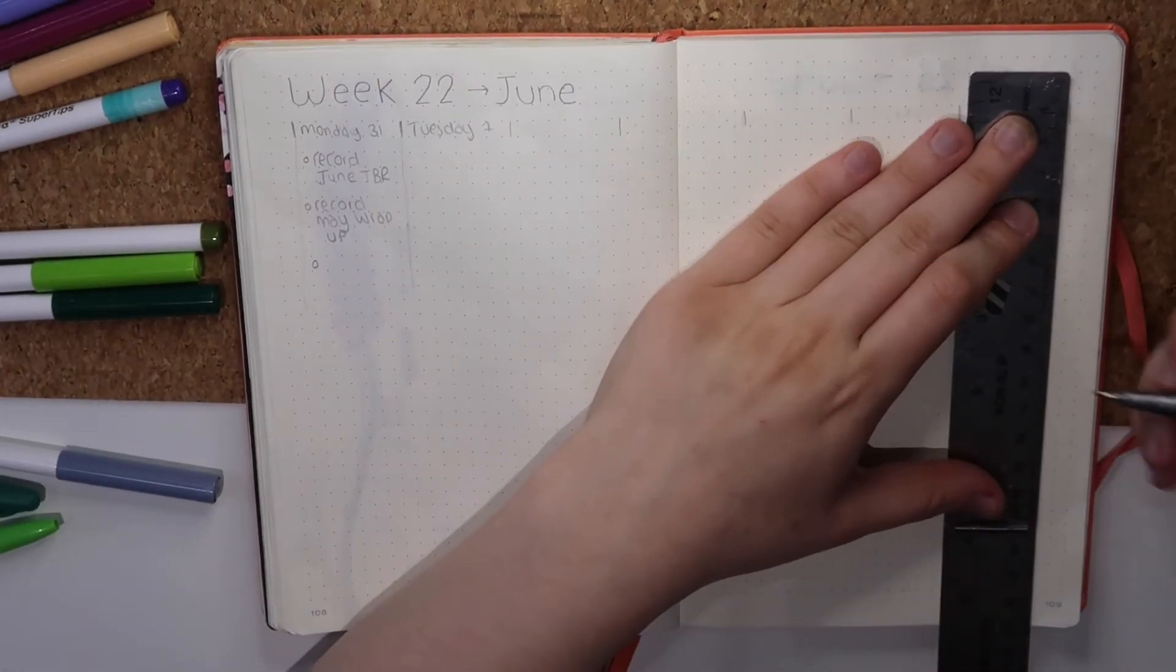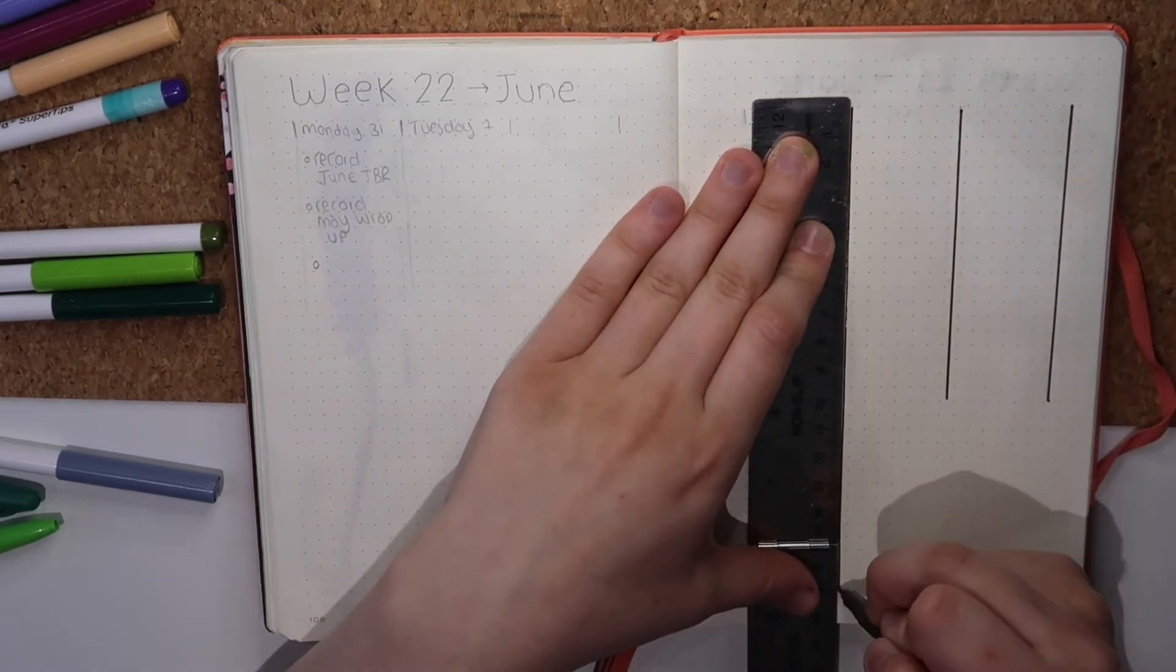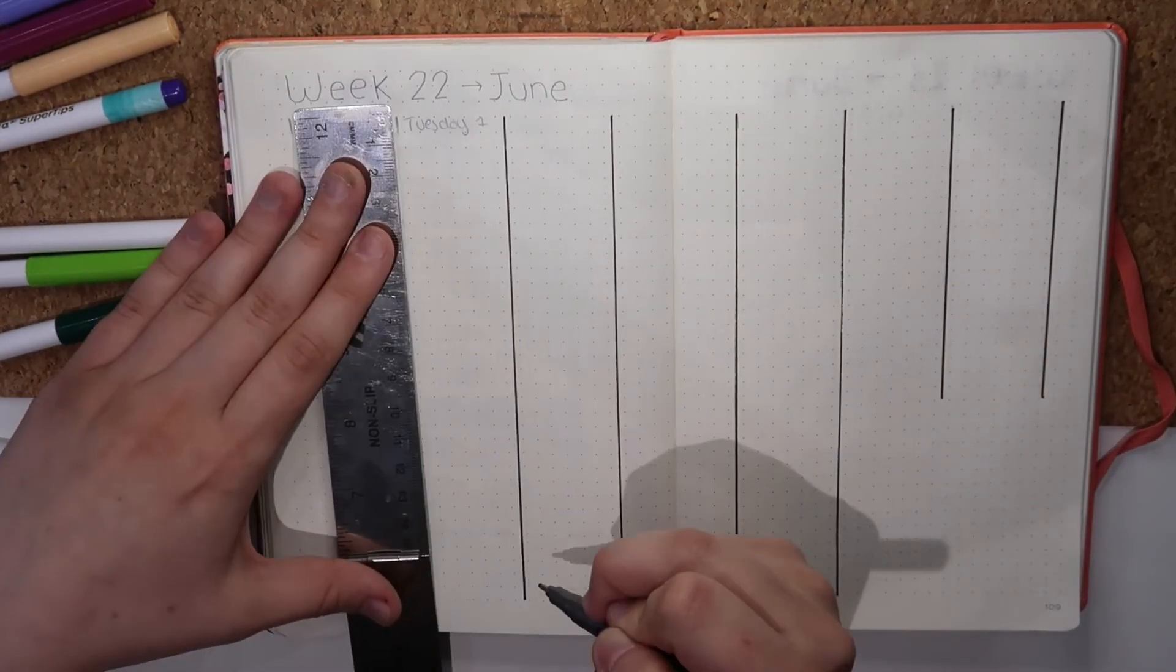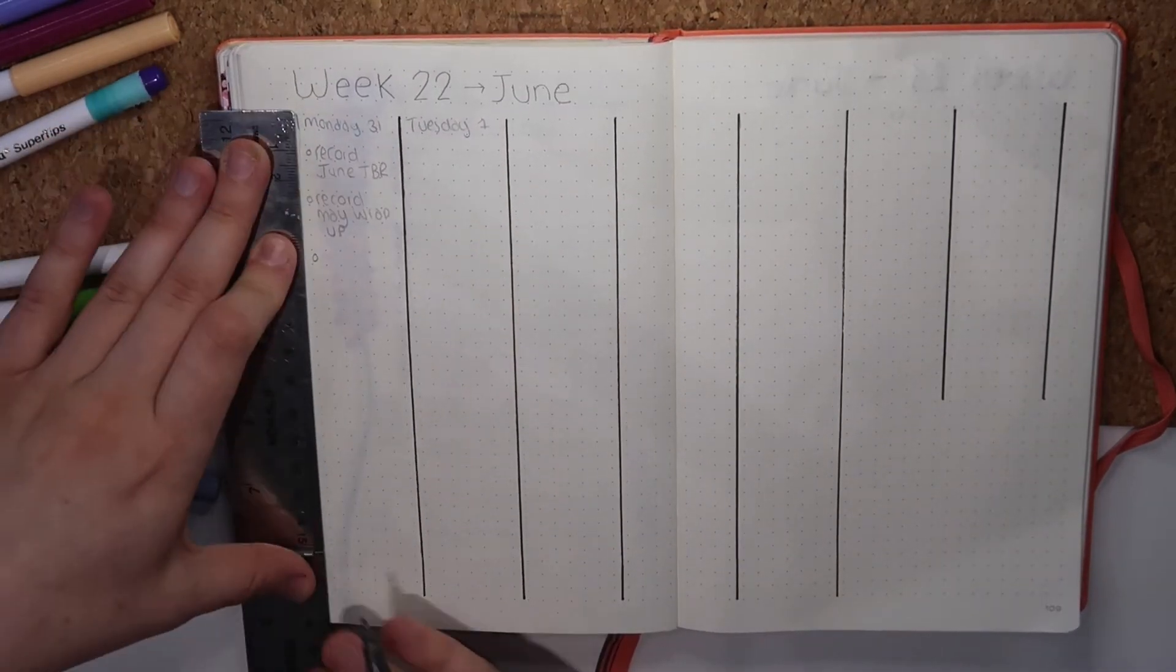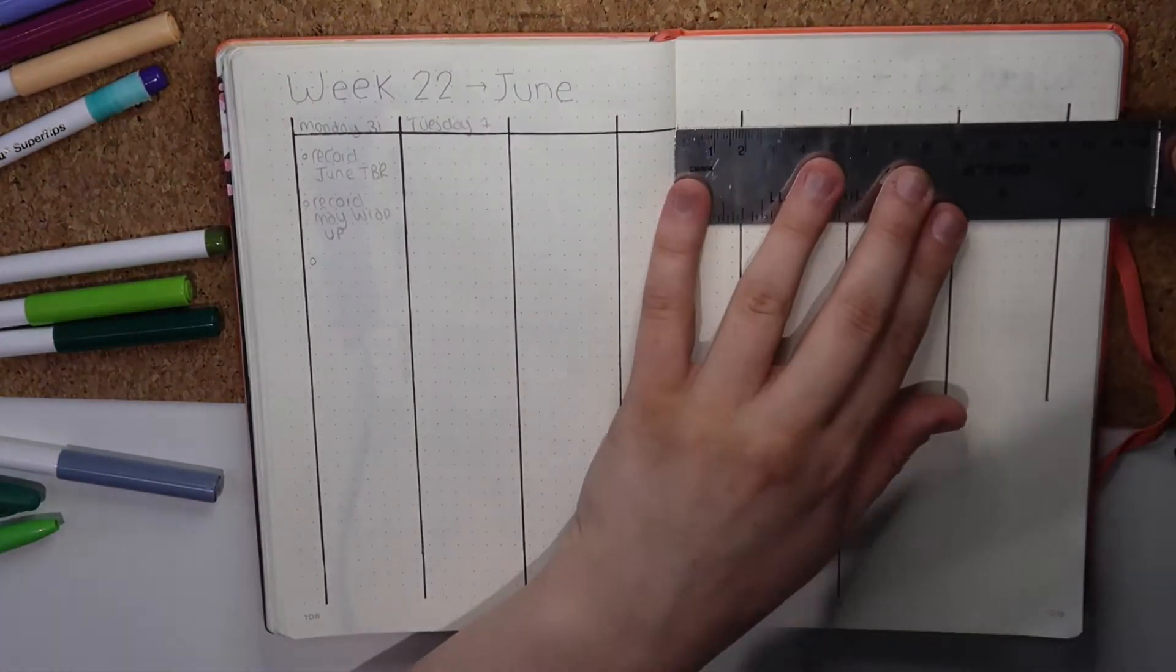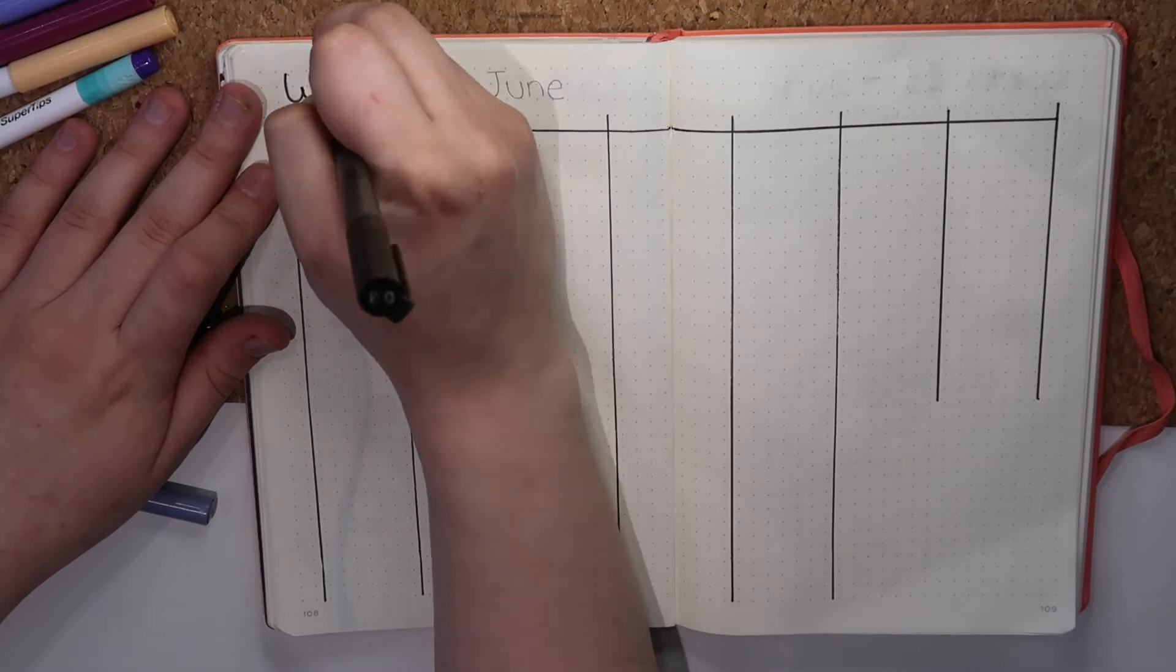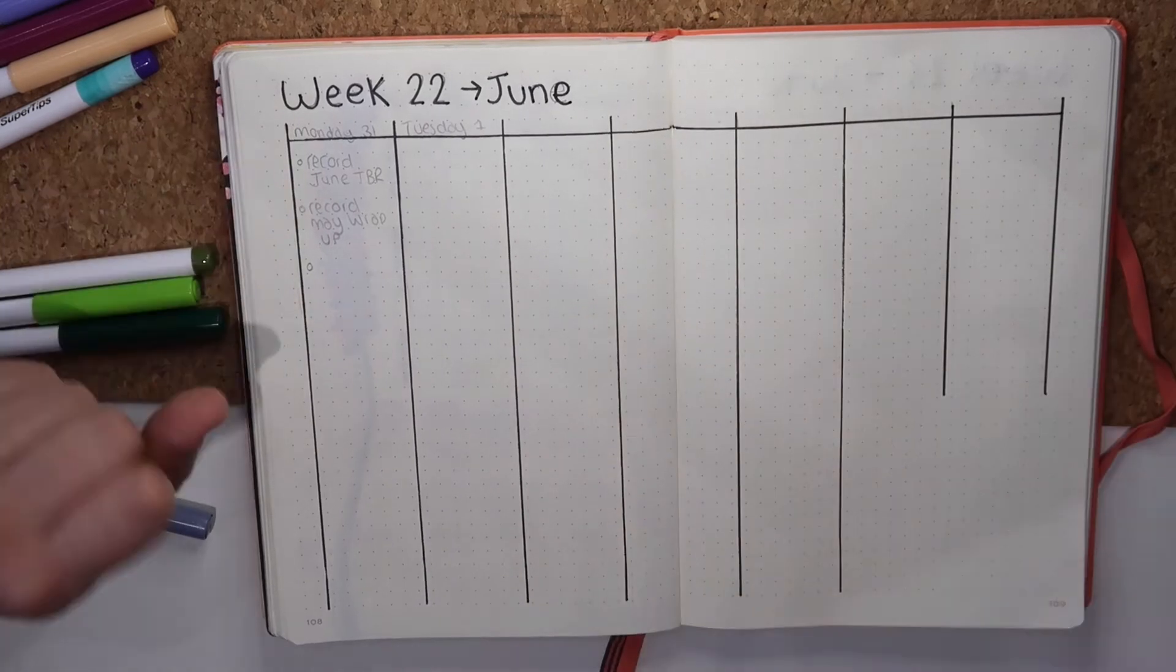So last but not least, I'm going to set up the first weekly spread for the month. I've been using this layout for a while now. I like to write my days out vertically so I make them as long as I possibly can. So each day ends up being seven grid spaces wide and then just as long as I want to draw it. I usually do it all the way down to the bottom leaving just one or two spaces free.